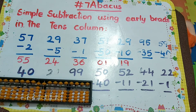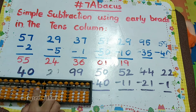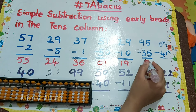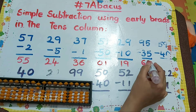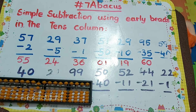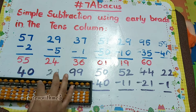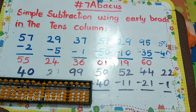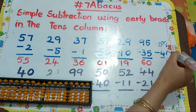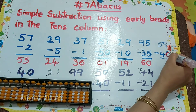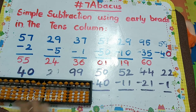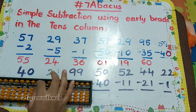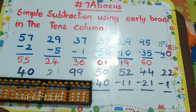95 minus 35, so the answer is 60. Next one: 59 minus 40 — how to do minus 4? Minus 5 plus 1, so the answer is 19.